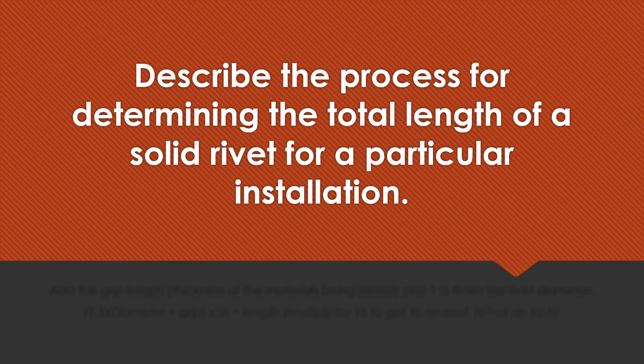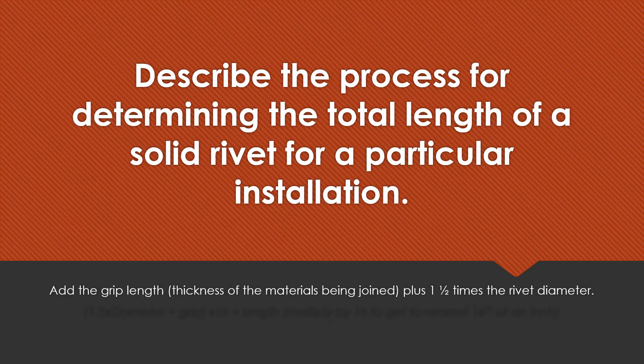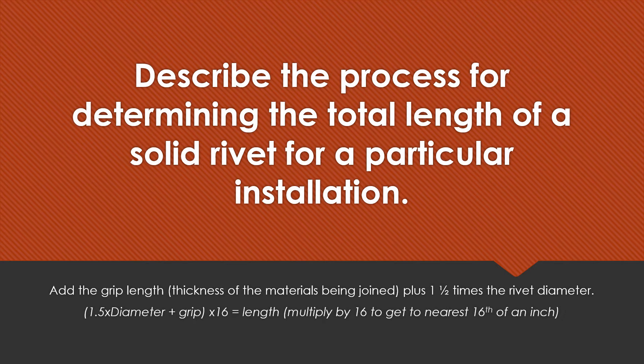Describe the process for determining the total length of a solid rivet for a particular installation. Add the grip length — the thickness of the materials being joined — plus one and a half times the rivet diameter. The formula is: one and a half times diameter plus grip, times 16, equals the length in sixteenths. We multiply by 16 to get to the nearest sixteenth of an inch.